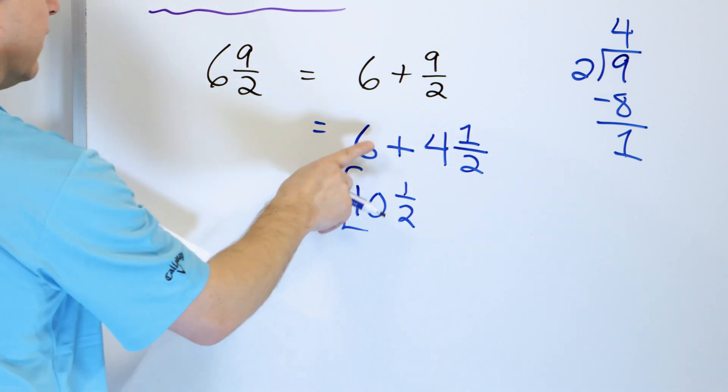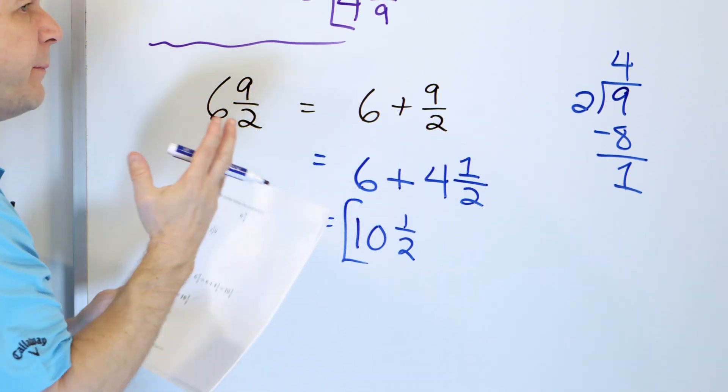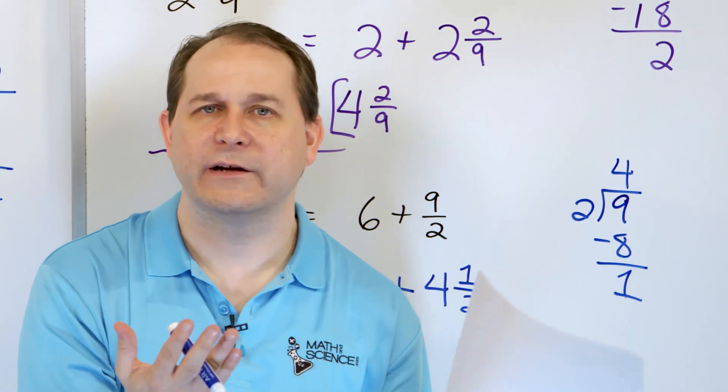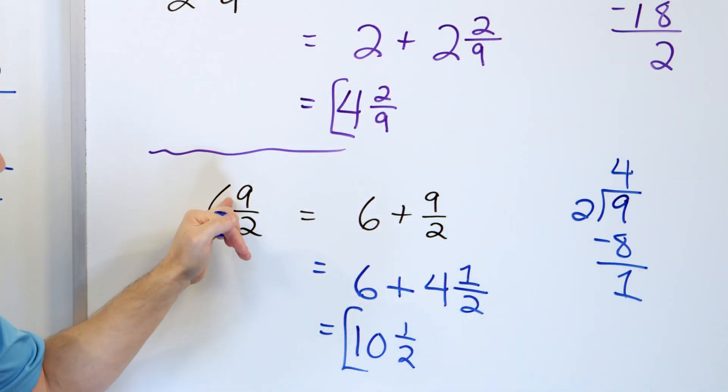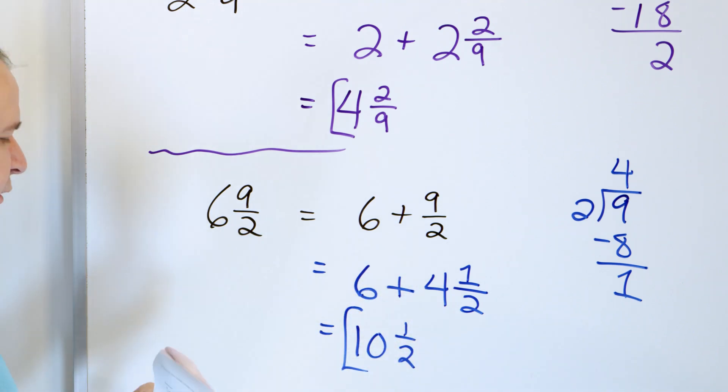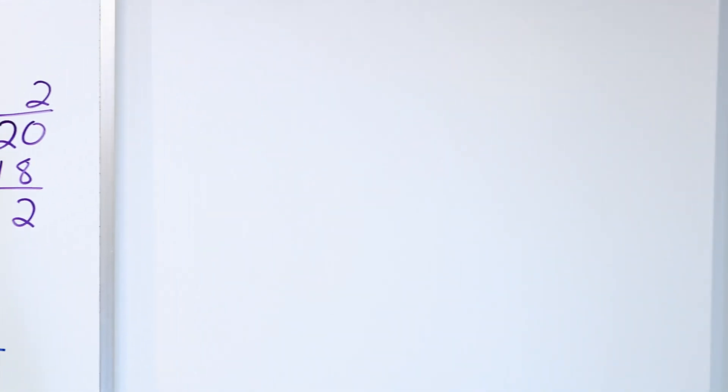So this 9 halves works out to be a lot of wholes because think about it. If I have a pizza cut into halves, only 2 halves are required to make another whole, but I have 9 halves. So it actually gives me 4 whole more pizzas, but then I have an extra half left over.